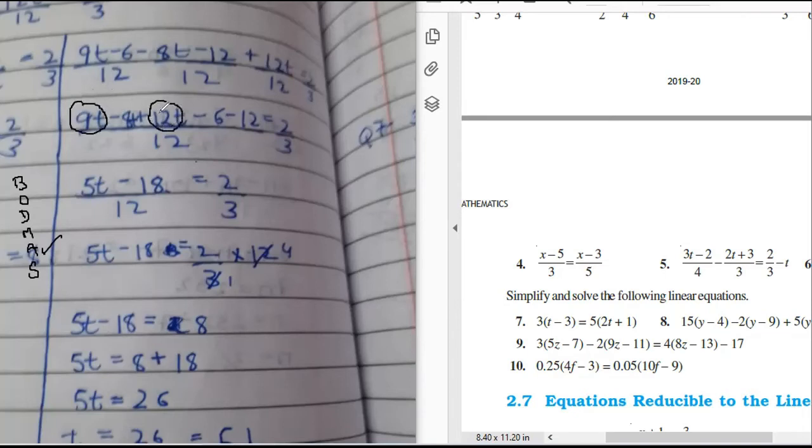So 9t is positive and 12t is positive, so we will add the positive numbers. So 9 plus 12 is what? 21t. And minus 8t is remaining. Is it making sense?